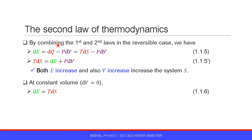By combining the first and second laws of thermodynamics in the reversible case, we have dE equal to dQ minus P dV, which equals T dS minus P dV, since dQ equals T dS in the reversible case, equation 1.1.5. This can be written as T dS equals dE plus P dV. This means both energy increase and volume increase increase the system entropy S. At constant volume, dE is equal to T dS, equation 1.1.6.